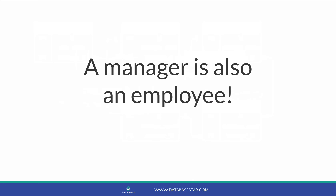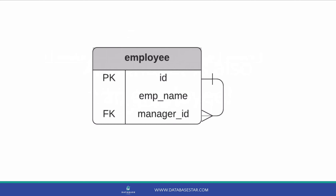How do we capture the manager of an employee? We can add a new column to the table called manager ID. This is a foreign key — it refers to another record in the same table. This is a strange concept but it works. It's perfectly valid to have a foreign key refer to the same table. You probably don't want to refer to the same row, but you can refer to other rows in the table.